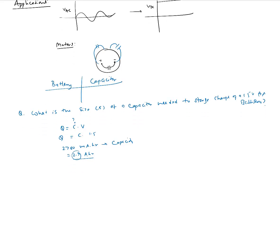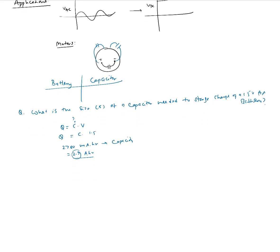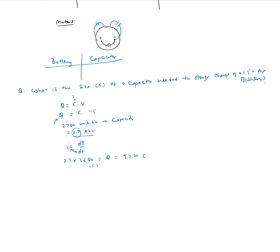So the total charge stored in a 2700 milliamp-hour battery is 9720 coulombs. I is defined as dQ over dT, the rate of change of charge. Plugging into Q equals C times V: C equals Q divided by 1.5 volts, which is 9720 divided by 1.5, equal to 6480 farads. Keep in mind this calculation assumes the battery discharges at a constant 1.5 volts, which never happens in reality — so this is essentially an upper limit of the total charge.